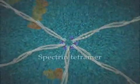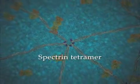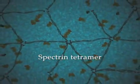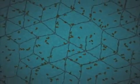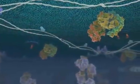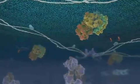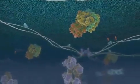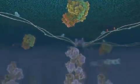Beneath the lipid bilayer, spectrin tetramers arranged into a hexagonal network are anchored by membrane proteins. This network forms the membrane skeleton that contributes to membrane stability and membrane protein distribution. The cytoskeleton is comprised of networks of filamentous proteins that are responsible for the spatial organization of cytosolic components.